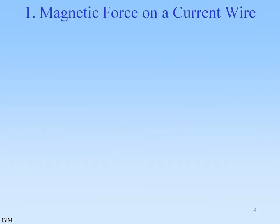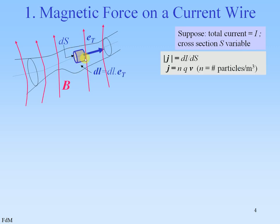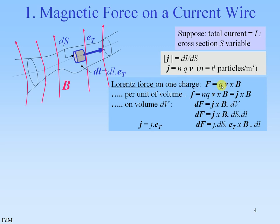The magnetic force on a current wire. Suppose we have a flow tube with moving charges, total current I, cross-section S is variable and there is an external field B. We can define volume elements with a length DL and a cross-section area DS and propagation direction ET. The current density J is given by the number of amperes per square meter, and J can be expressed as NQV, in which N is the number of particles per cubic meter, Q is its charge and V is its velocity. The Lorentz force on one charge is given by charge times velocity times external field — a vector multiplication.